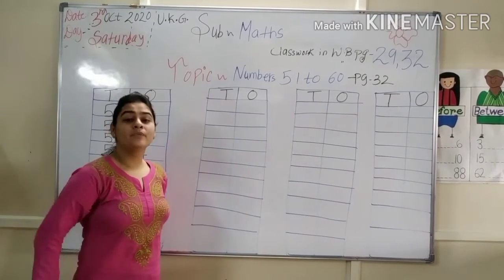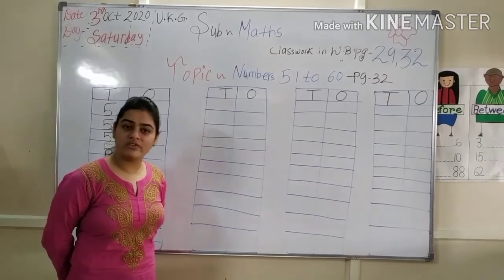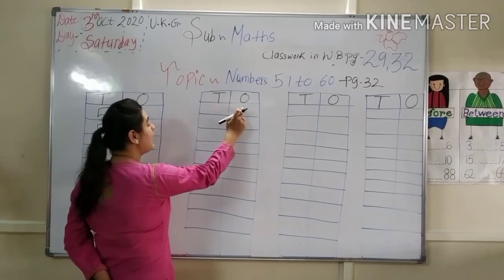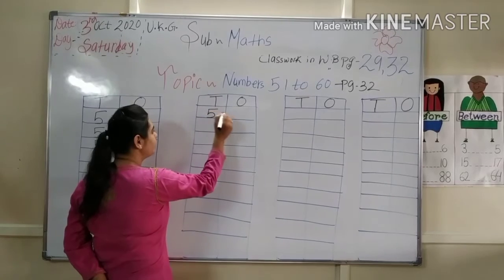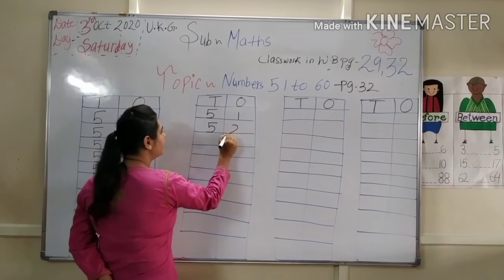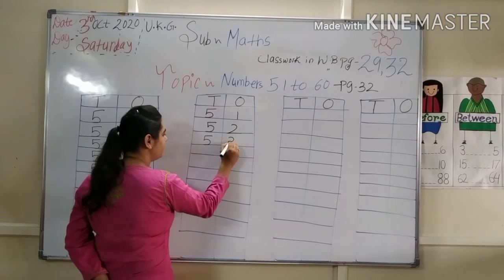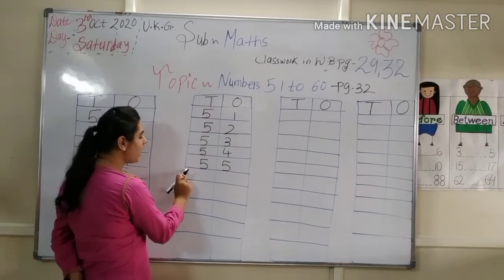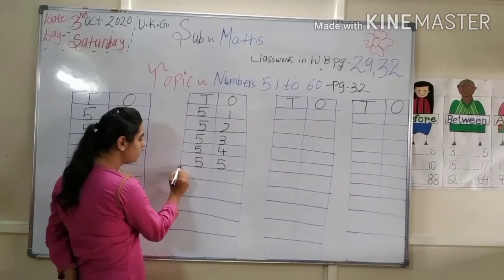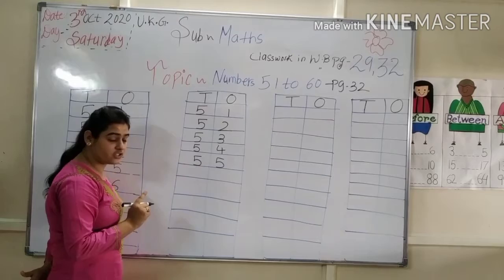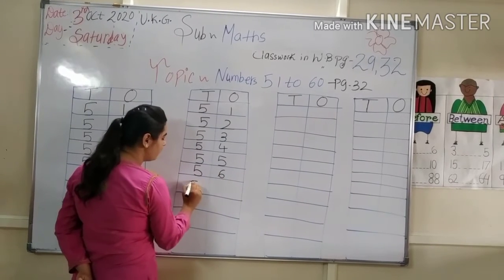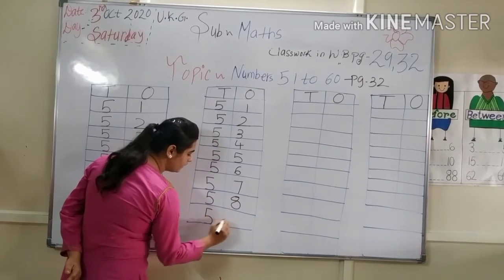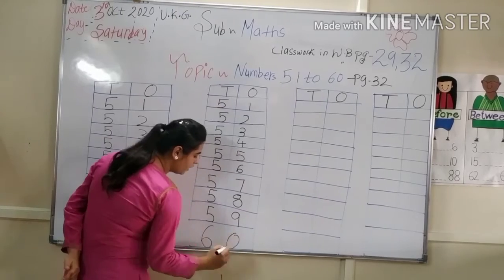Now kids, humko jo jo aaj lines di hain, aapko wo lines mere saath saath complete karne hain. 51 to 60 numbers — so kids, write with me in boxes. 10s mein humko 5 likhna hai, 1s mein humko 1 likhna hai: 51. 52, 53, 54, 55. Aap jab number likhouge, aapko jo neeche line di gayi ho, us line ke saath touch karne hain — jo blue color ki box ki last line di gayi hai, wahaan tak number ko touch karne hain. 56, 57, 58, 59, 60. Okay, touch to bottom line.